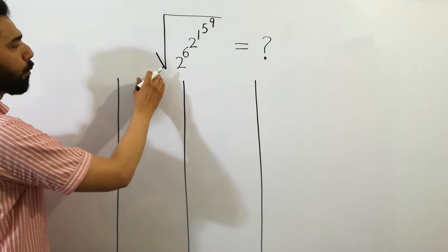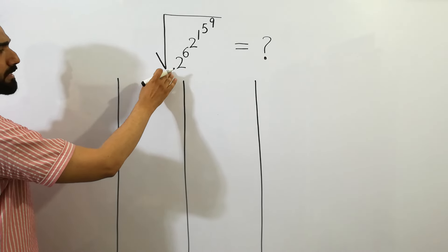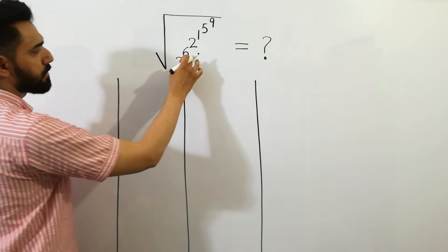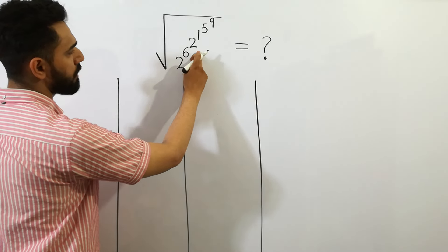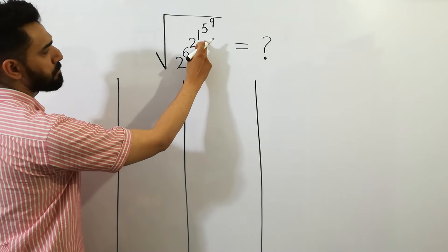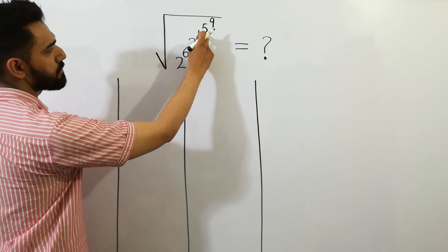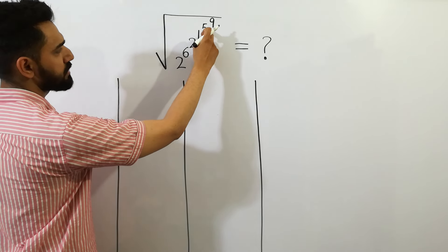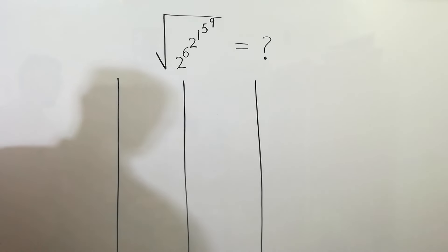Hey guys, we have a problem here. 2 to the power 6 to the power 2 to the power 1 to the power 5 to the power 9 equals what? To solve this problem,